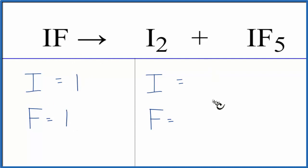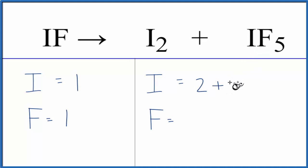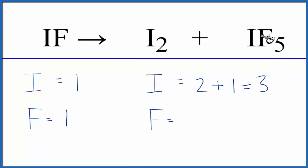On the product side we have two iodine, but be careful here because we have another one out here — don't forget that. That gives us three iodine atoms and then five fluorine atoms.